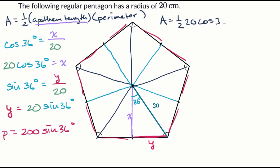Cosine of 36 degrees, that's the apothem length right over there. And then I want to multiply that times 200 sine of 36 degrees. That's the perimeter length. And now I just figure what this is. Let's see, this one-half times 20 is just going to be 10. 10 times 200 is equal to 2,000.